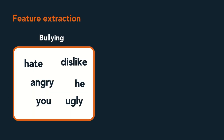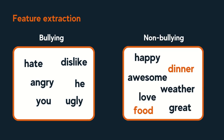Next, we perform feature extraction. We extract common attributes in the bullying content category, such as use of negative words like hate, angry, and ugly, and pronouns such as you and he. We also extract common attributes in the non-bullying content category, such as use of positive words like happy, love, awesome, and great, and neutral words such as dinner, weather, and food.